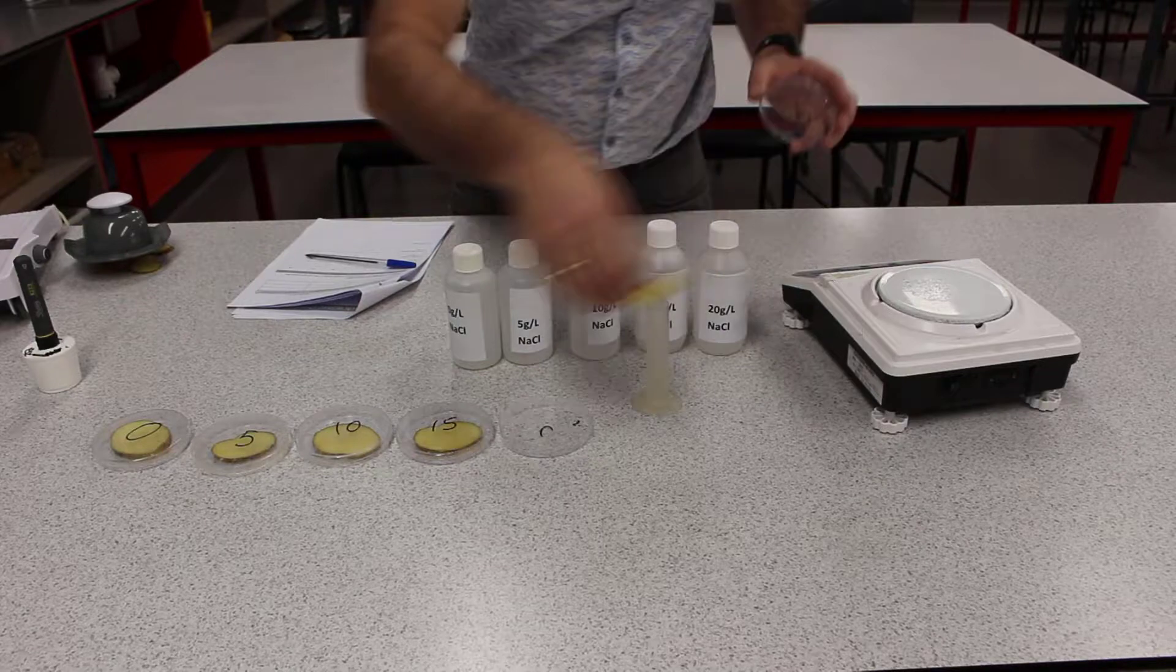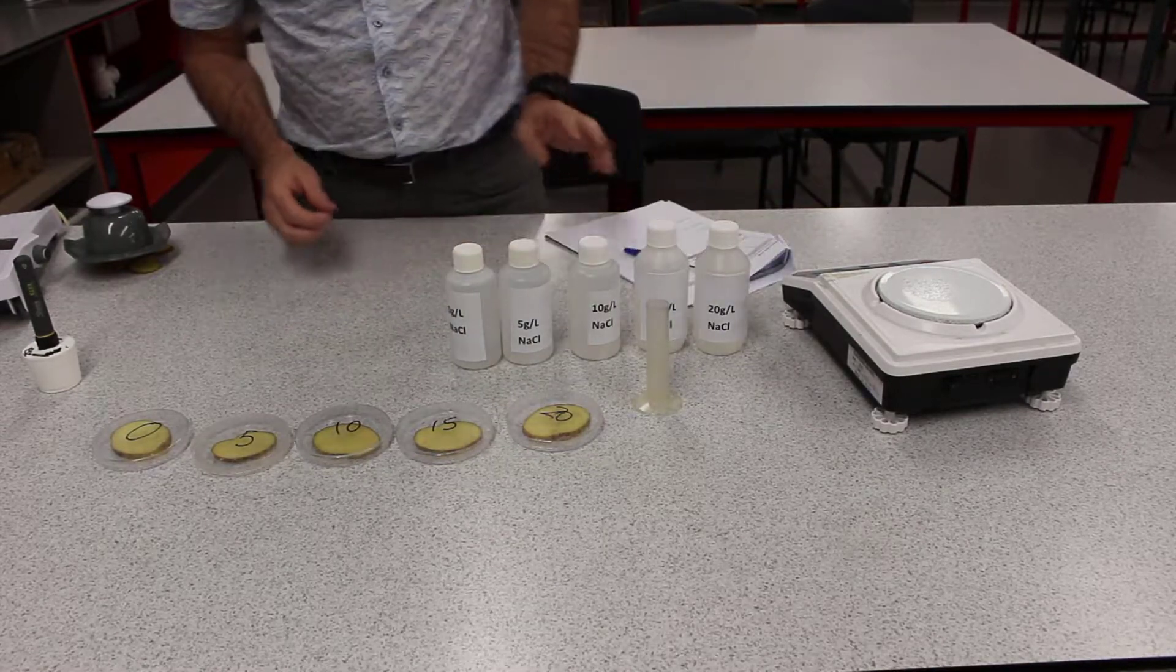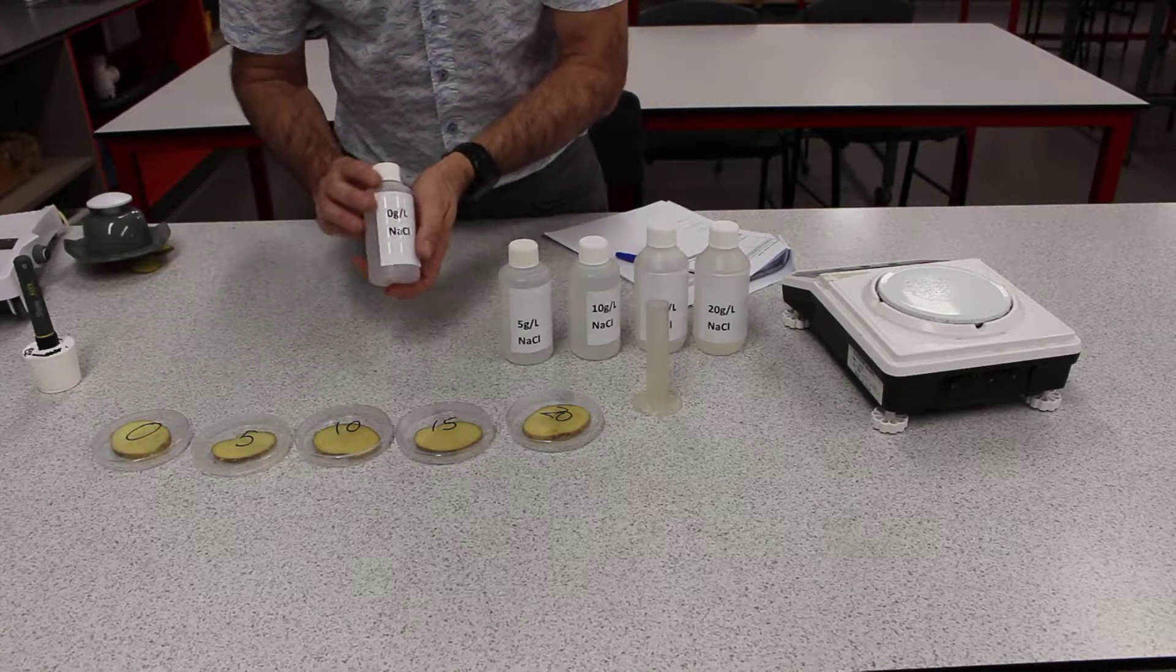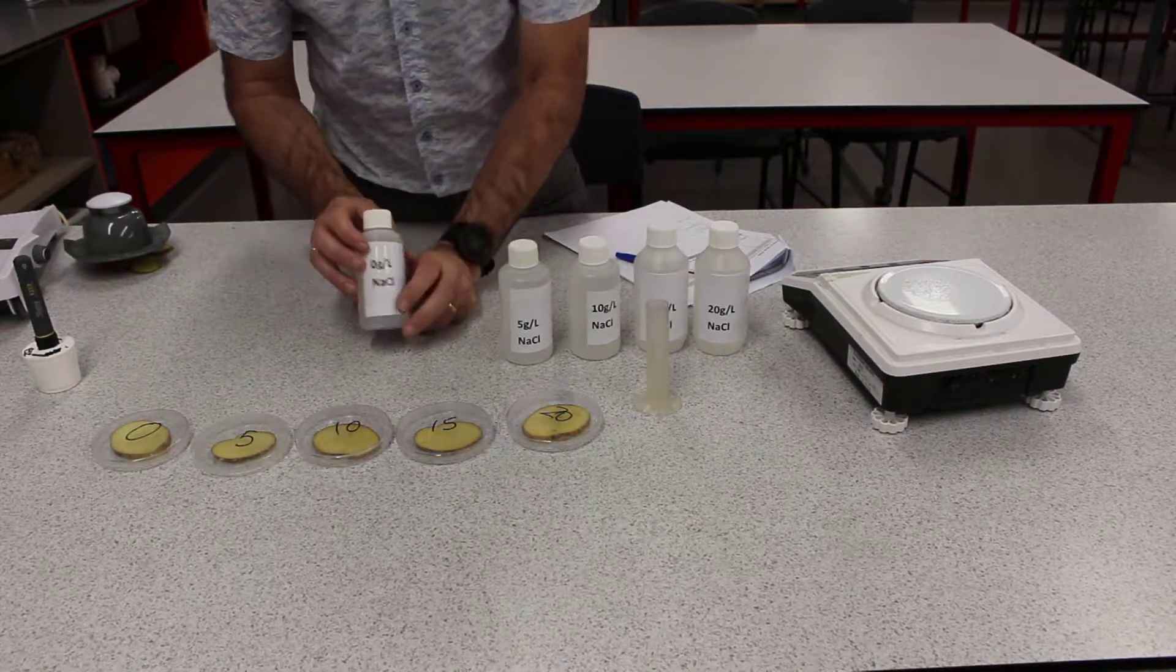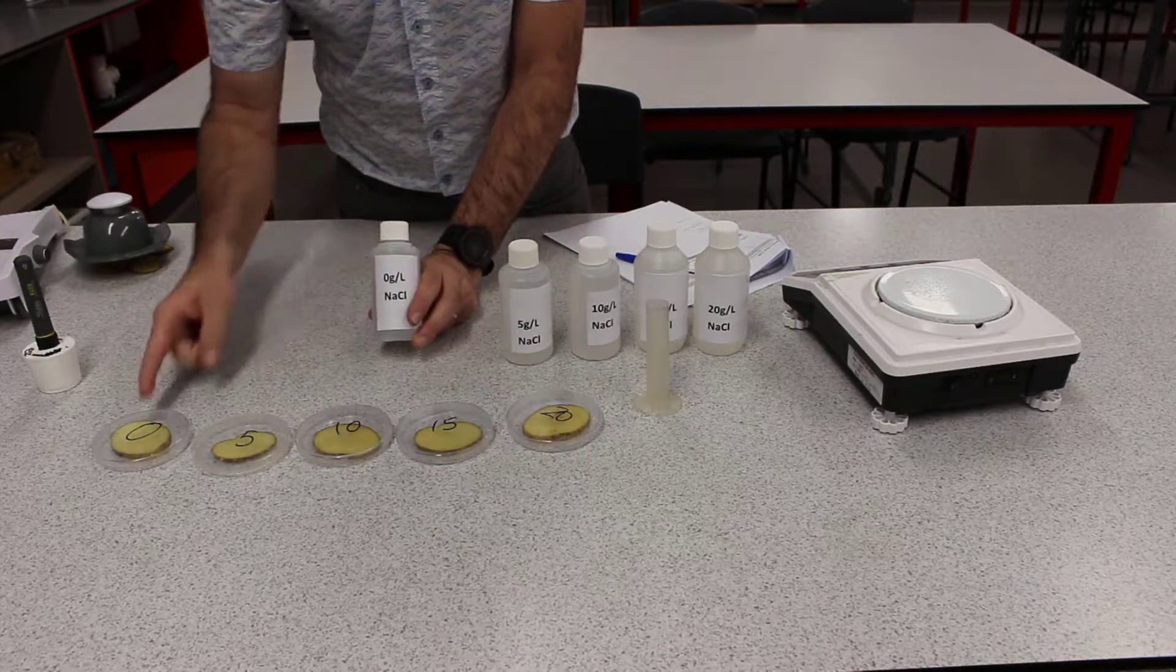Put it straight into the container and lid on and then we'll do the same thing with 20. Write down that mass as well. So now next thing we need to do is we need to cover our potato slices with our solutions. Again, really just making sure that they go in the right dishes.